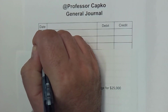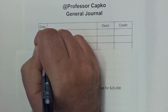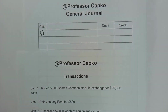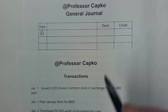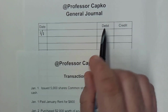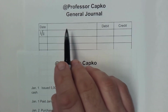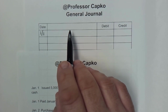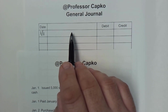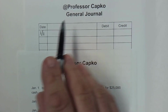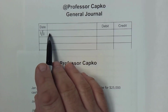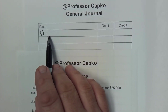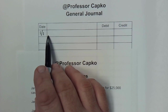So I'll just put that as 1-1. And we always record the debits first — always record whichever account is debiting first — and the debits are going to be left justified.